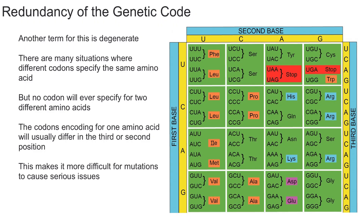In this video I'm going to explain what it means for the genetic code to be redundant and why it's important. Another term for the redundancy — some people like to refer to the genetic code as degenerate — but they both essentially mean that there are many situations where different codons will specify the same amino acid.